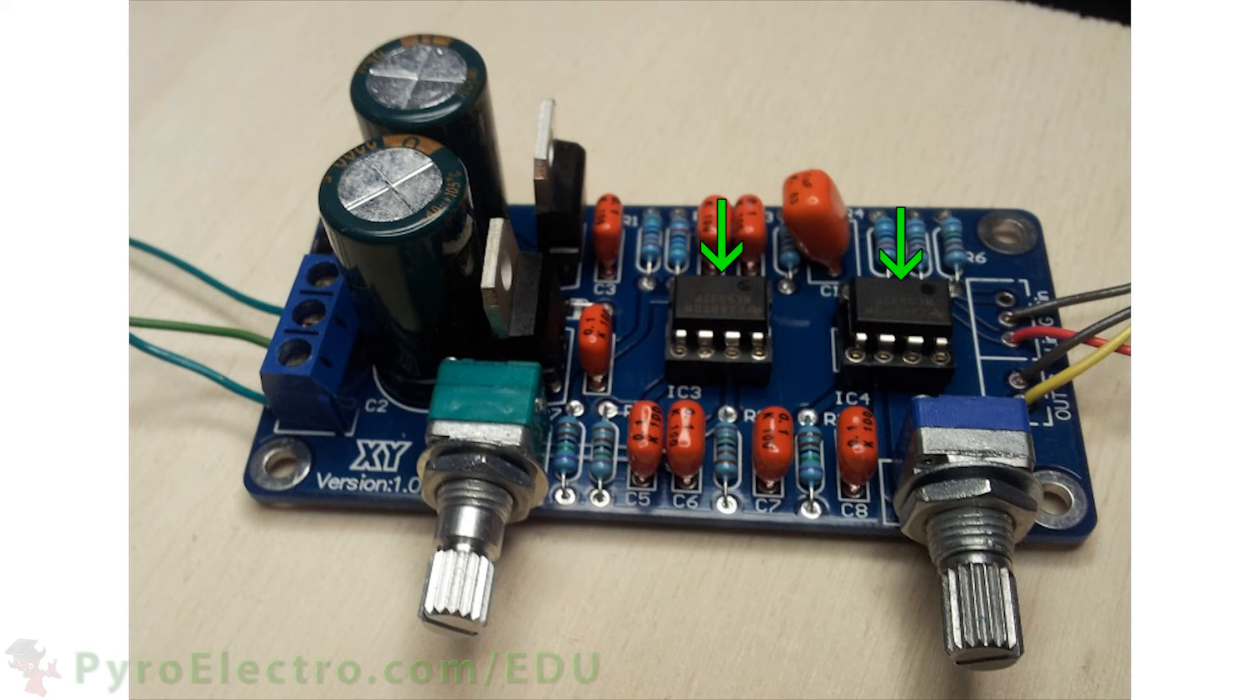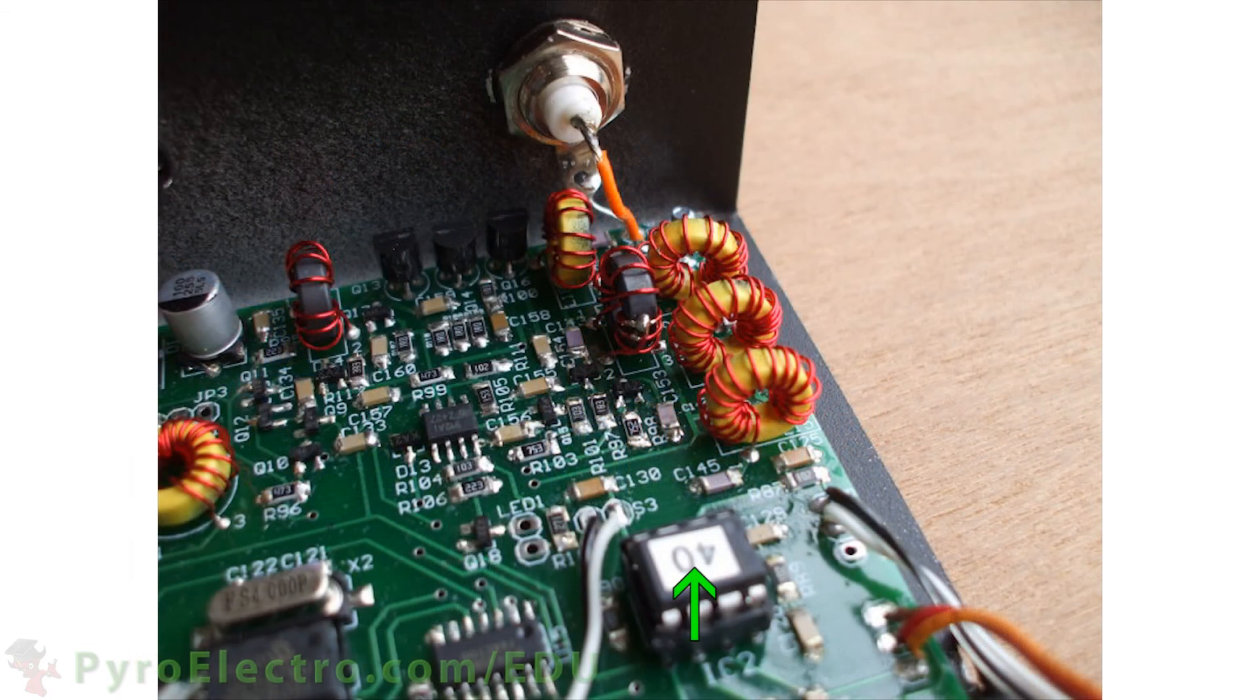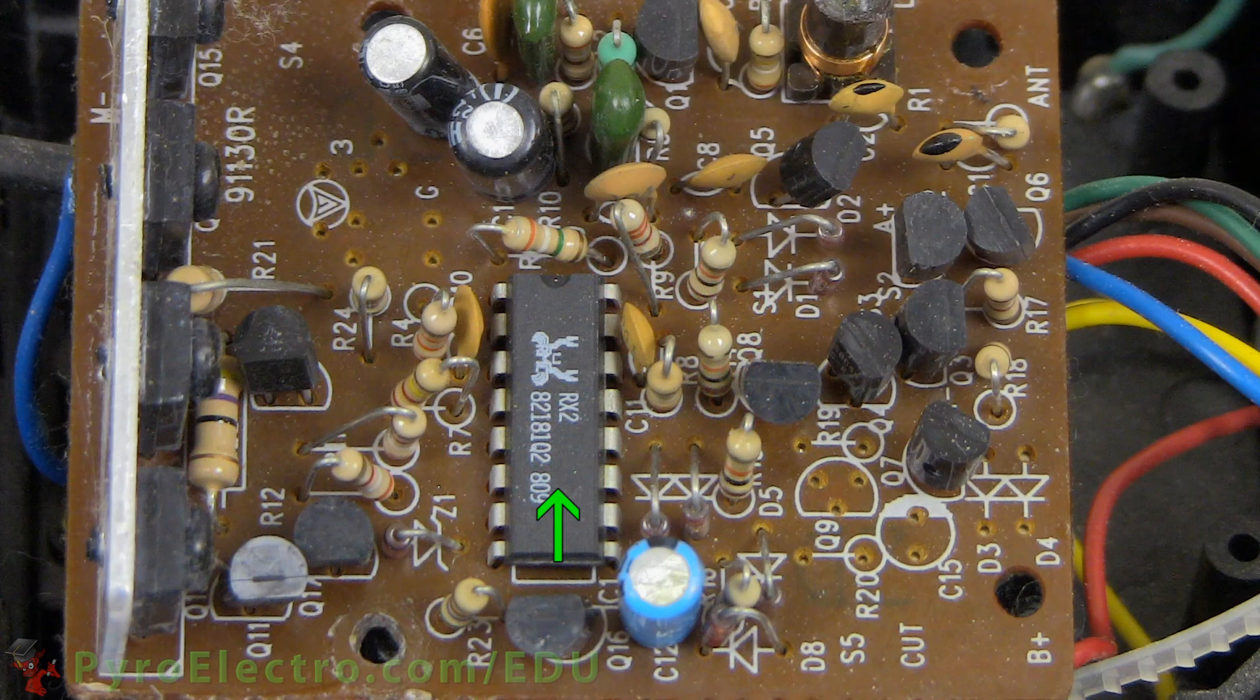In the real world, op-amps are used like mad all over the place for filtering and amplifying signals. They can be used on wireless or audio or many other types of signals. Sometimes op-amps are even part of a custom IC package like on this remote control car PCB.